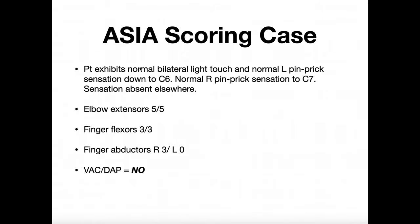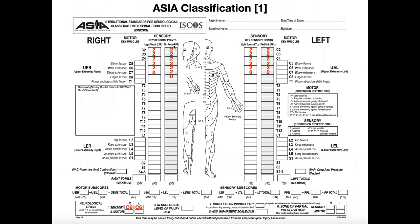We have a patient who exhibits normal bilateral light touch and normal left pinprick sensation down to C6. On the left side they have normal pinprick sensation down to C6, and light touch on both sides is normal down to C6. So bilateral light touch is normal down to C6 — on the right side for C2, C3, C4, C5, and C6, I'm going to put twos. I'll do the same on the left side for light touch, filling in twos all the way from C2 down to C6.